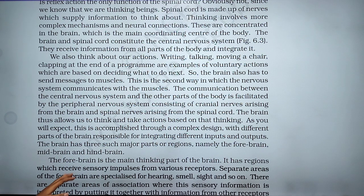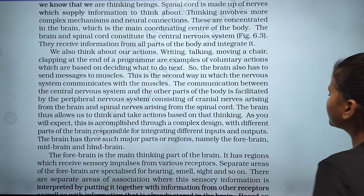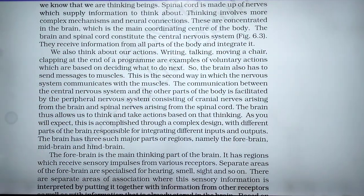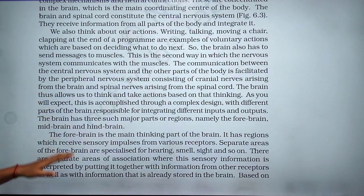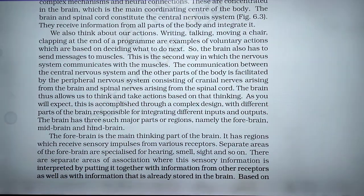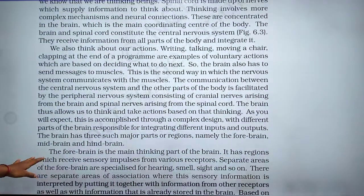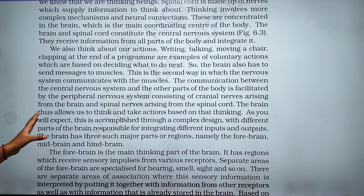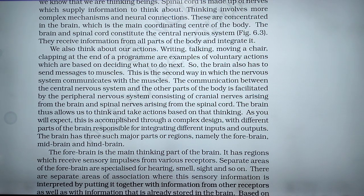The communication between the central nervous system and the other parts of the body is facilitated by the peripheral nervous system, consisting of cranial nerves arising from the brain and spinal nerves arising from the spinal cord.